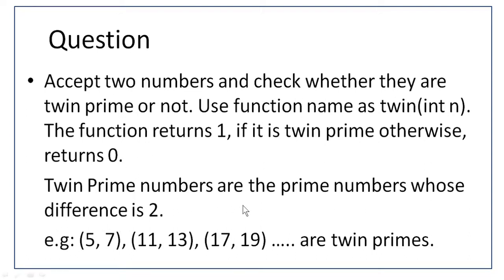Twin prime numbers are prime numbers whose difference is 2. Some examples: 5 and 7 are twin prime, 11 and 13 are twin prime, and 17 and 19 are twin prime. These are some examples of twin prime, and we are going to see how to implement this in BlueJ.